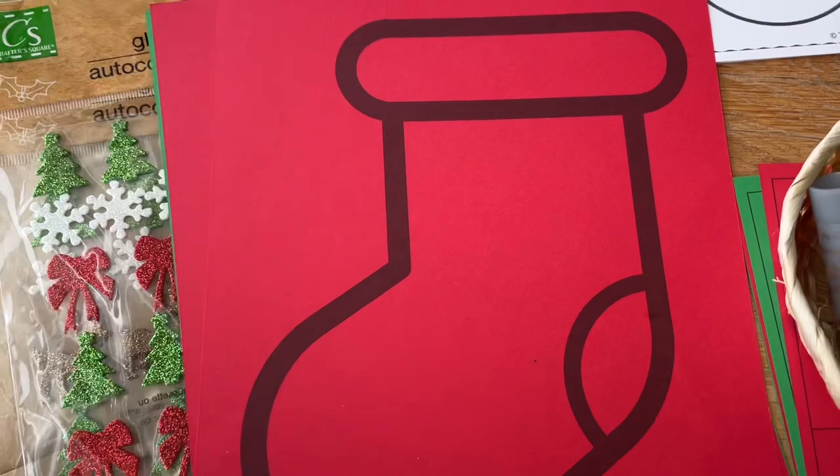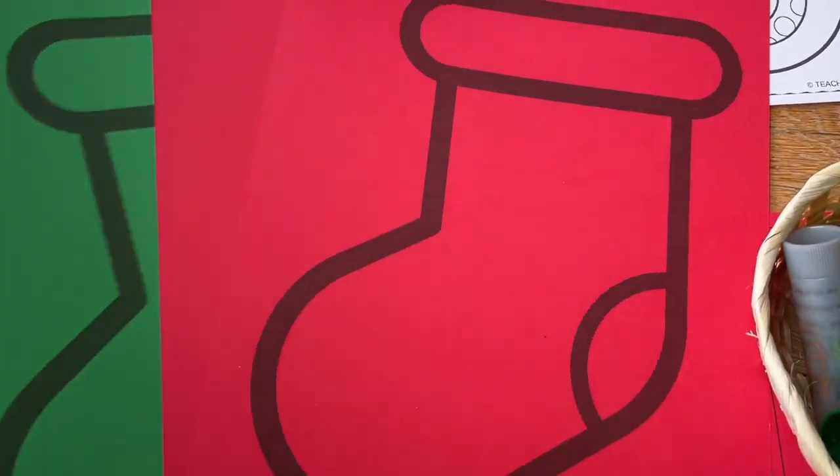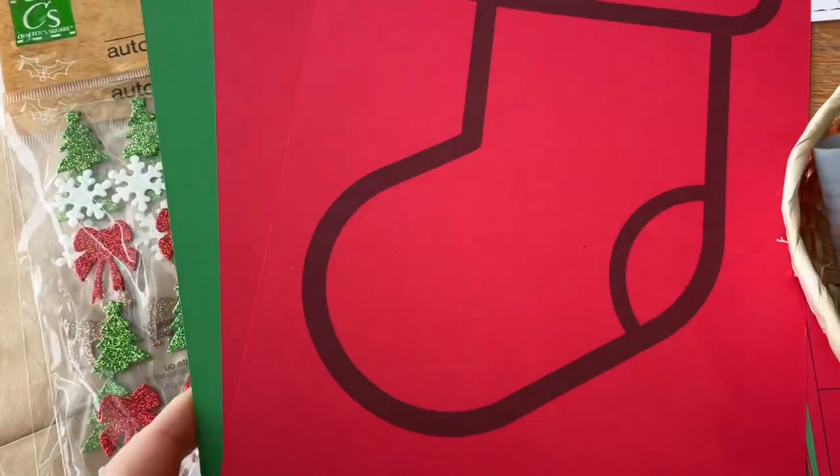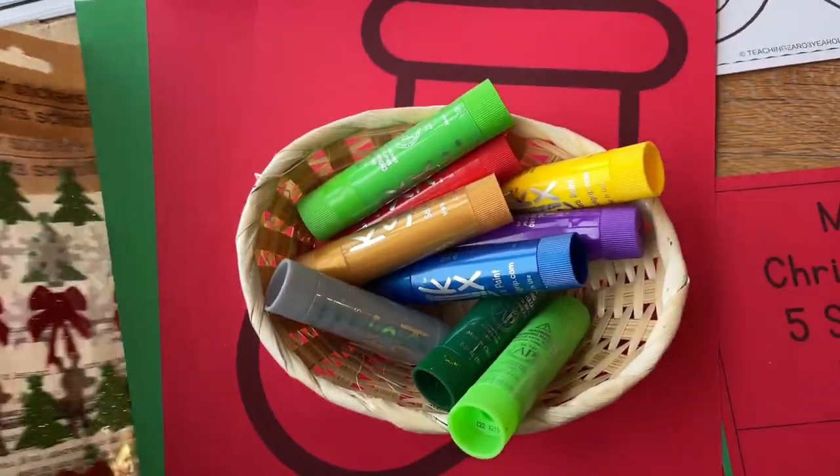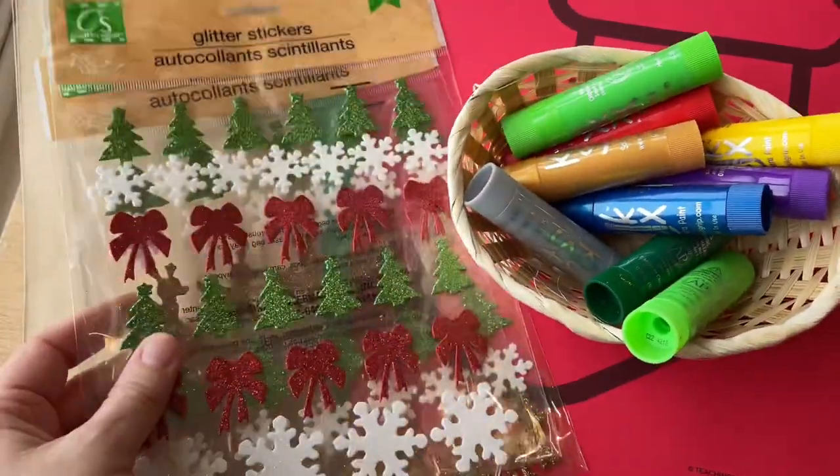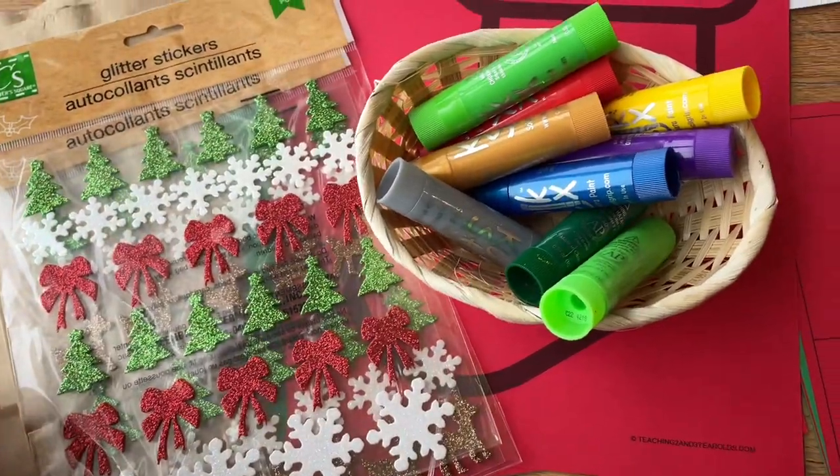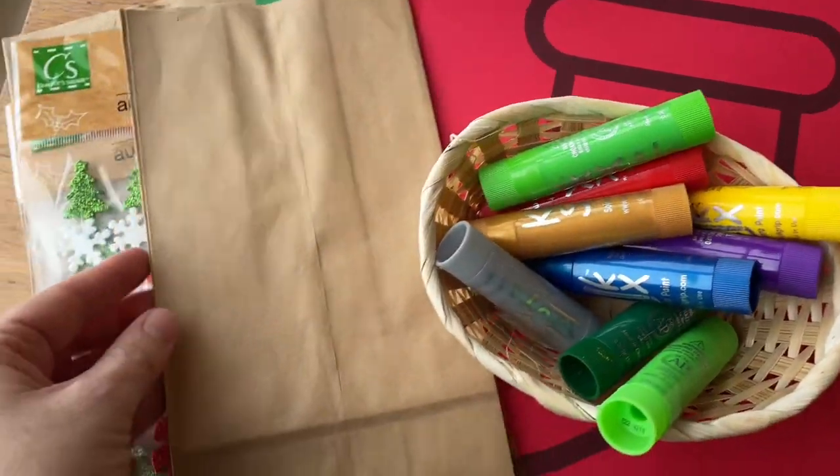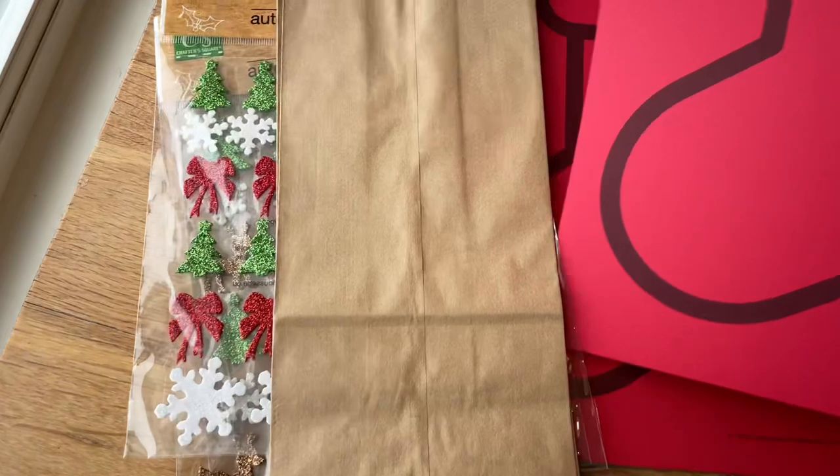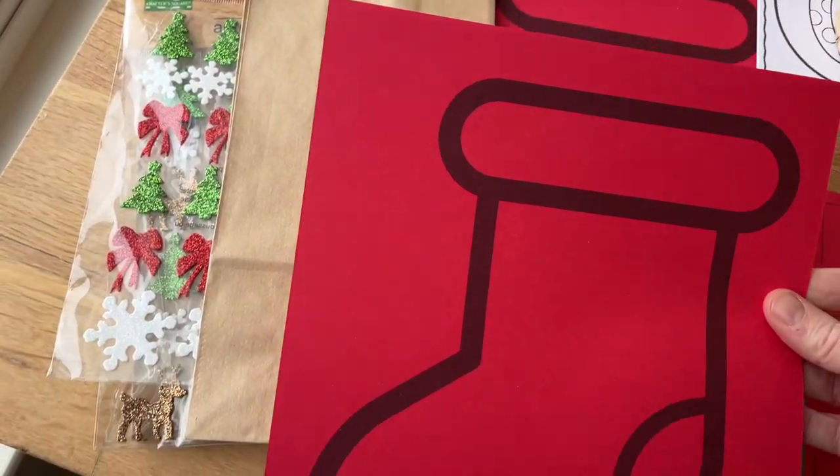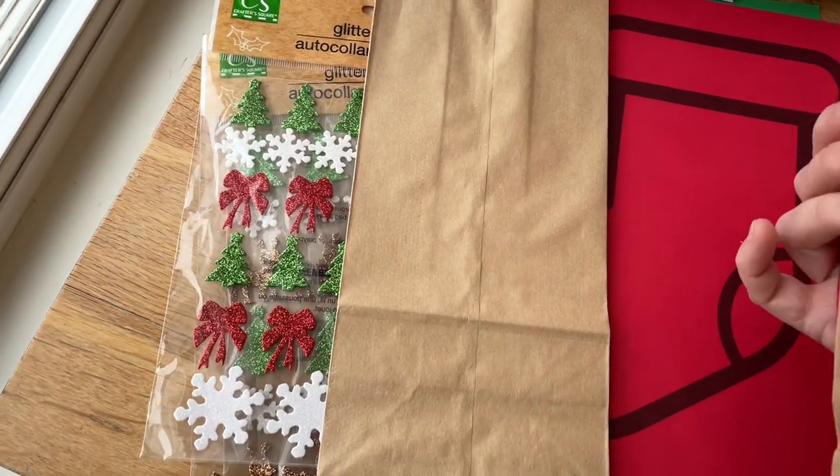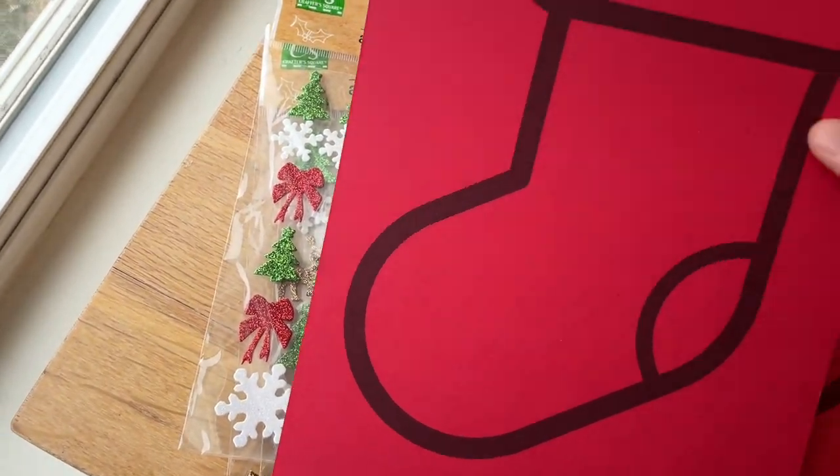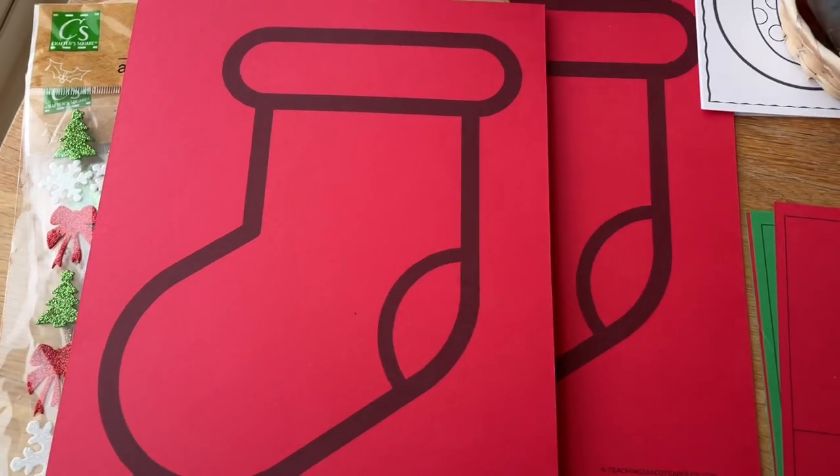The first thing that we're going to be working on are these little stockings. This is something I want to hang in the room all month long. So they can pick red or green. I printed this template on card stock and then they'll paint them with the little wikki sticks and then embellish them any way they want with these little stickers and then I'm going to write their name up top. And then when it's time to go for winter break, I'm going to glue this little paper bag onto the back of this cutout stocking and fill it up with just some little treats and snacks and goodies for the children to take home.